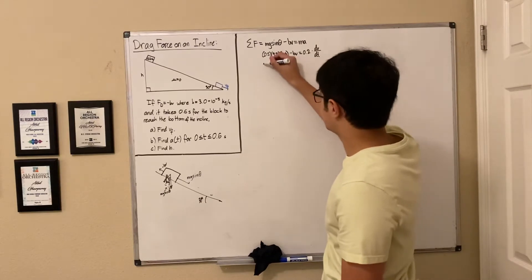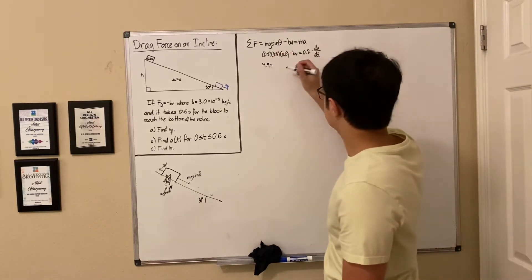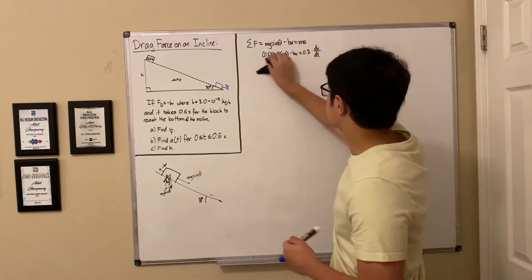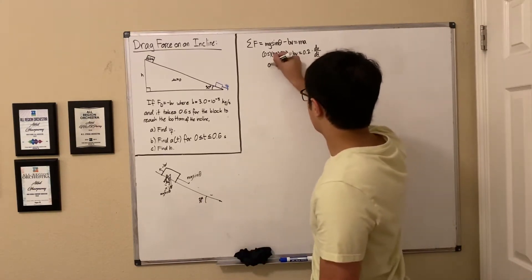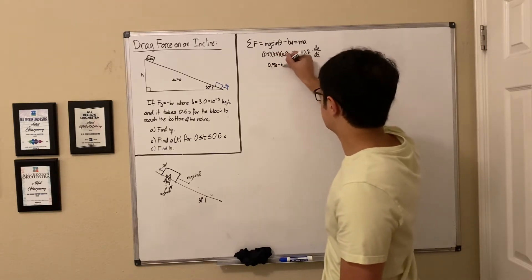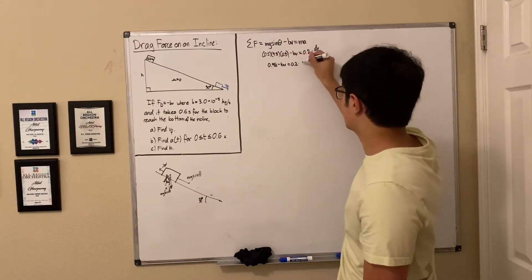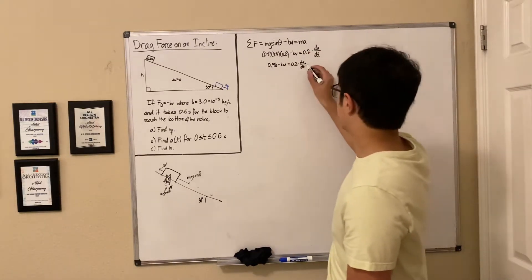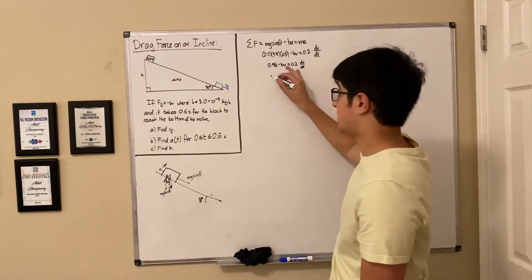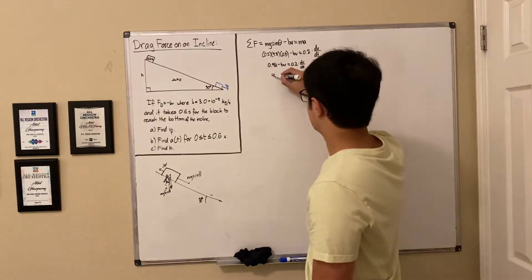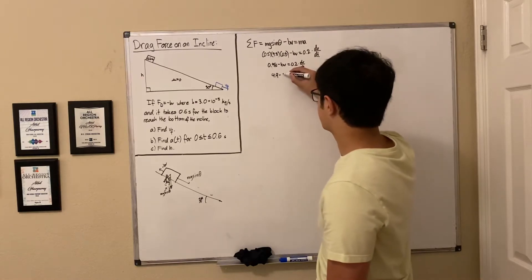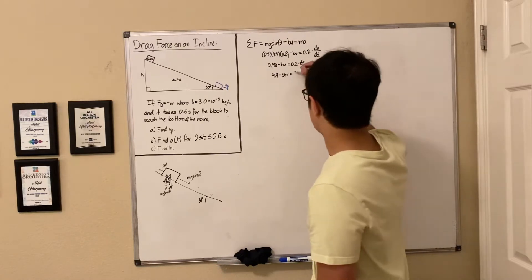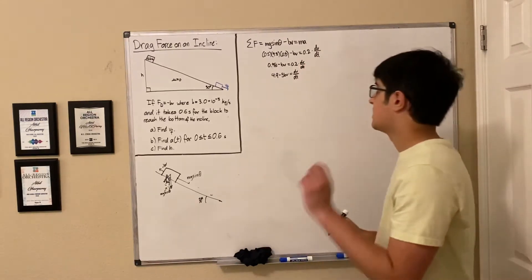Simplifying gives 0.98 minus BV equals 0.2 times dV/dt. Isolating dV/dt by dividing through by 0.2 — since 1 divided by 0.2 equals 5 — we get 4.9 minus 5BV equals dV/dt. This is a separable differential equation, and our goal is to find velocity as a function of time.